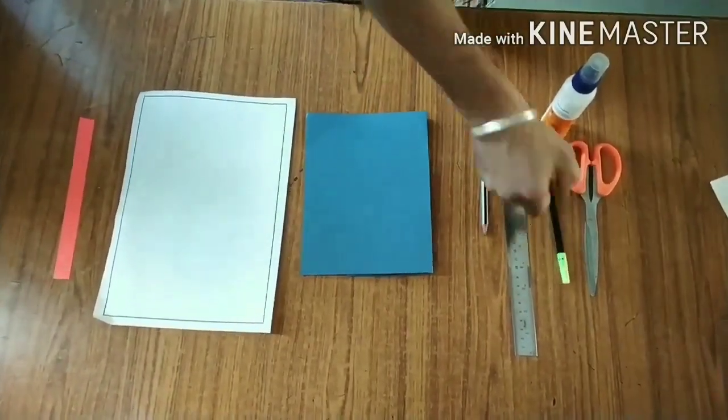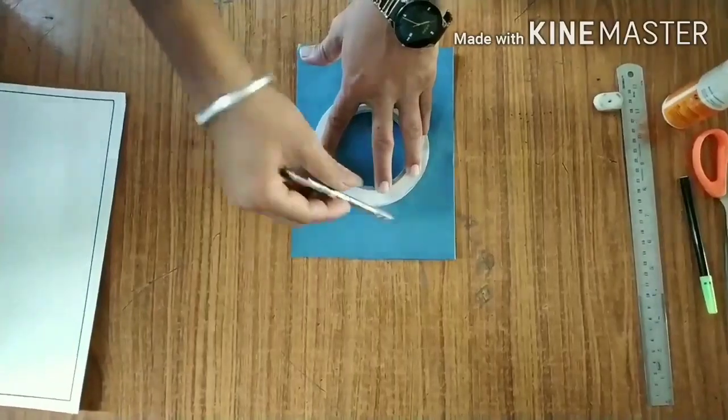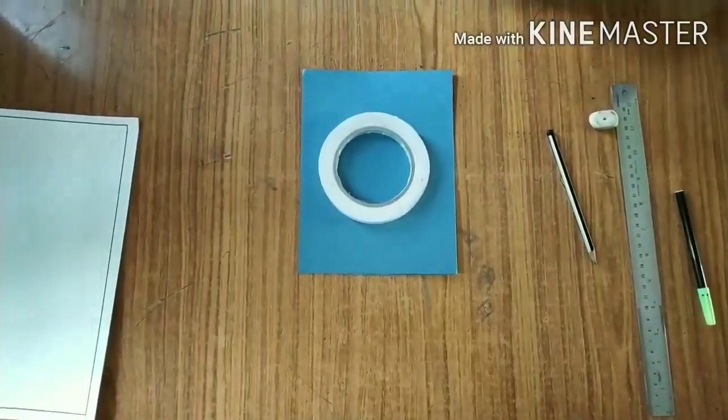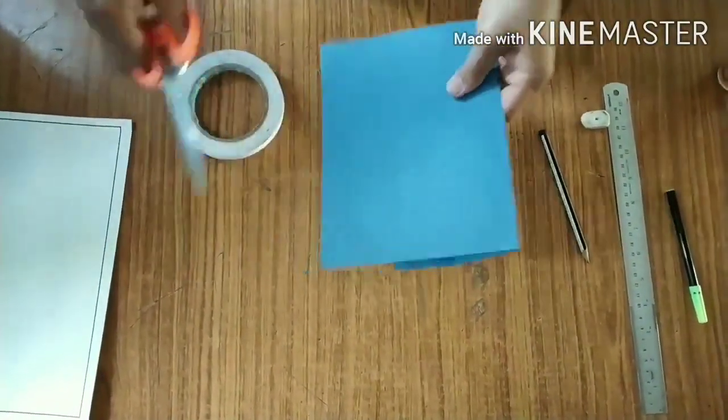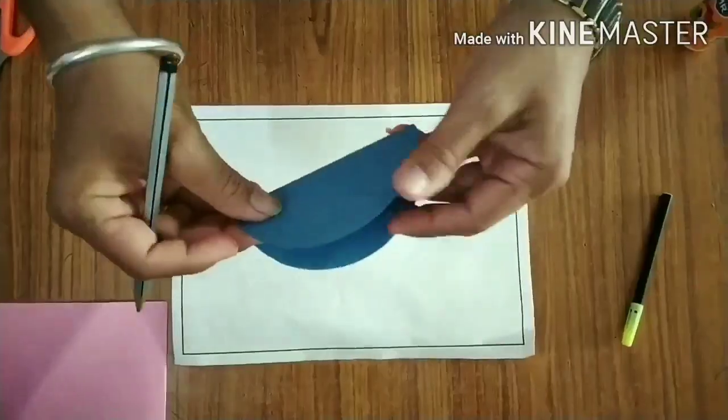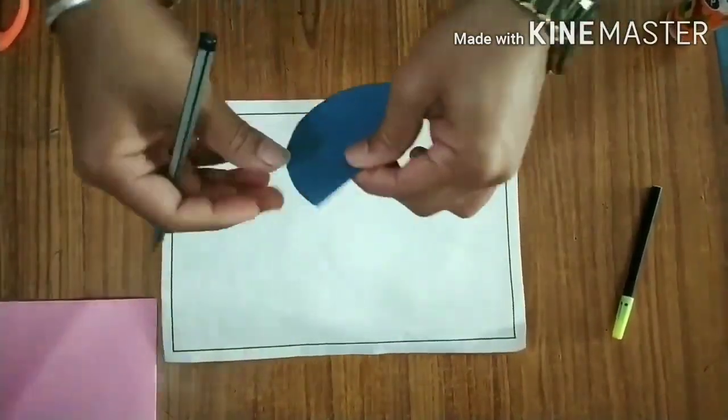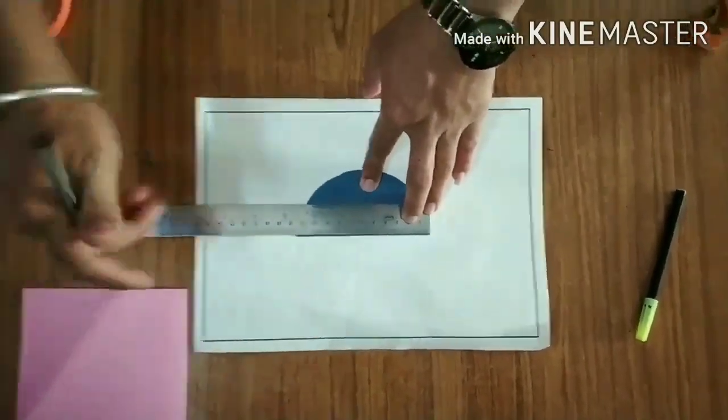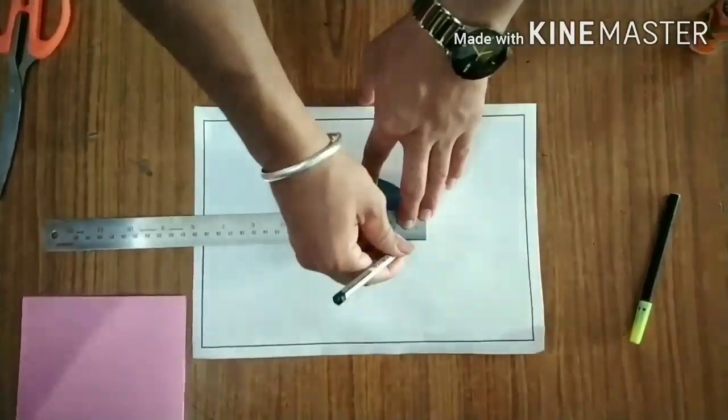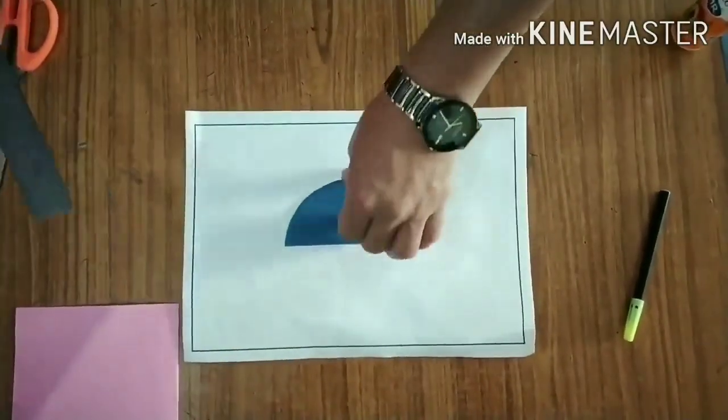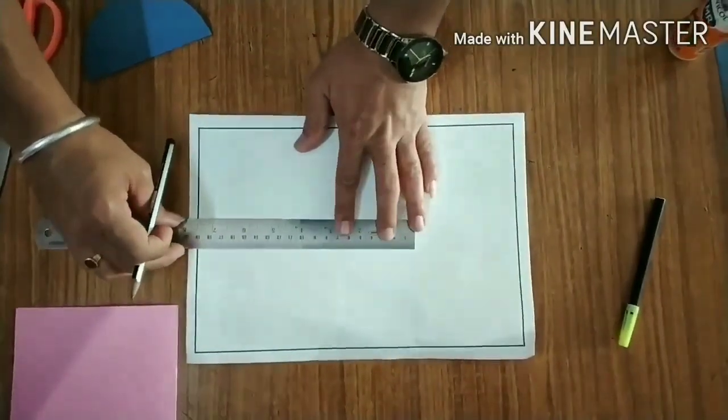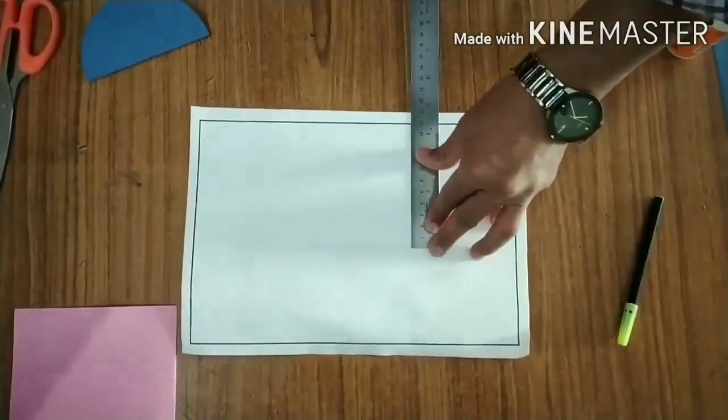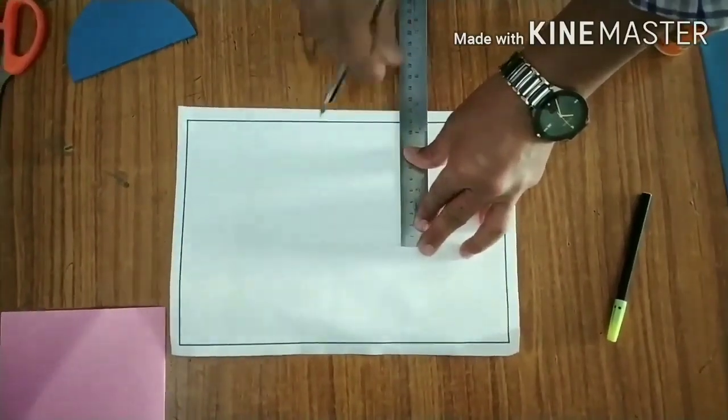Make a circle. Fold the circle. For cutting the strips, leave one centimeter gap from each side. Prepare a strip and cut it as shown in the video.